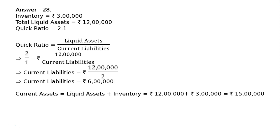Current assets is equal to liquid assets plus inventory. That is liquid assets Rs. 12 lakhs plus inventories Rs. 3 lakhs, hence current assets is Rs. 15 lakhs. Note that current assets equals liquid assets plus inventory plus prepaid expenses, but here there are no prepaid expenses, so current assets is Rs. 15 lakhs.